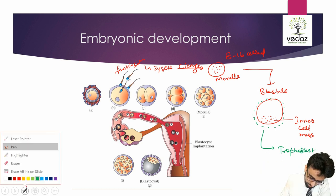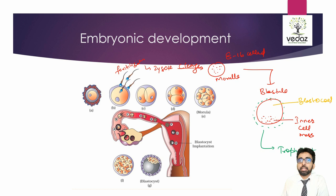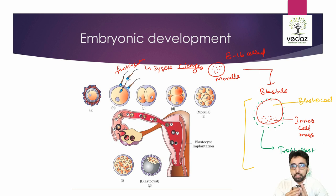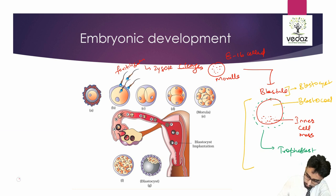At the same time, there will be formation of a cavity, and this cavity is known as the blastocoele. This overall structure is the blastula. Since it is a cyst-like structure — any fluid-filled structure is known as a cyst-like structure — the blastula is also known as the blastocyst. After blastula, the next stage is gastrula.